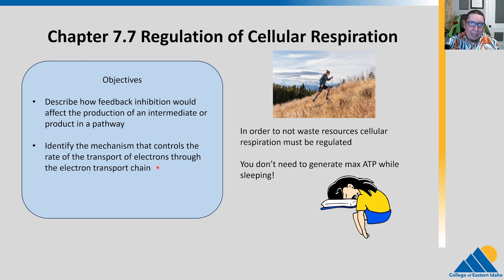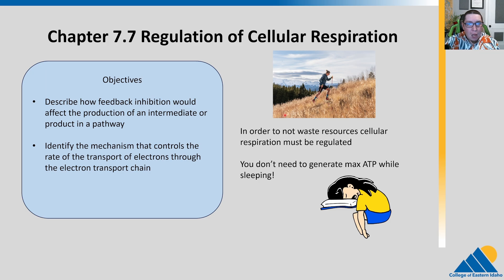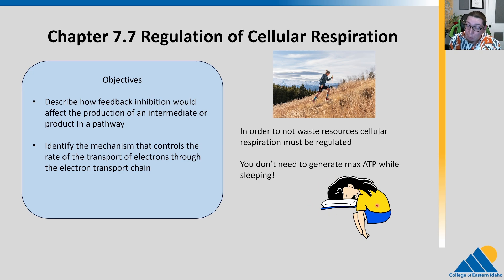So why do we need to regulate our cellular respiration? Really, in order not to waste resources, we have to regulate it. When we need energy — like Courtney DeWalter, who I would argue is the greatest ultra runner — she needs energy when she's running uphill. But we don't need maximum ATP generation when we're sleeping. We'd instead need just a little bit and we could conserve that glucose, save it for a time when we need it. So we have to have a way of turning up respiration and turning down respiration.